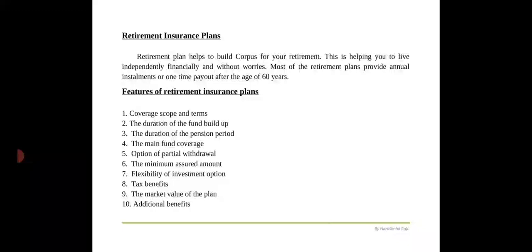The coverage scope of the policy must be favorable for your needs. The second benefit is the duration of the fund build-up — the corpus through regular payments in the form of pension can be made after retirement. The next is the duration of the pension period, which denotes the time period after retirement when the subscriber will be entitled to receive monthly pension payments. The next is the main fund coverage, also known as sum assured, indicating the total coverage for which the subscriber is entitled. Always make sure the sum assured offers you and your dependent spouse guaranteed coverage after retirement.